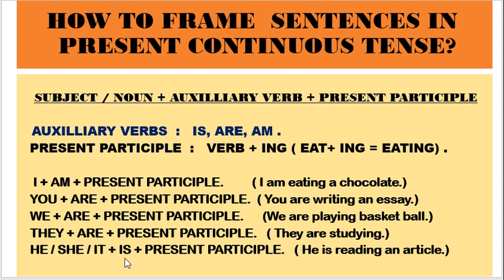I hope you are very clear with how to frame sentences in present continuous tense. We need to remember: subject first, then auxiliary verb according to the subject, and then the -ing form of the verb.